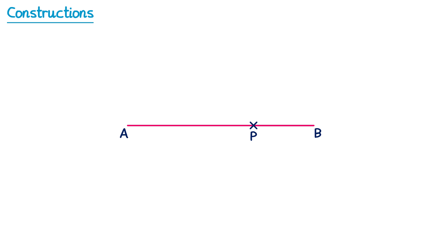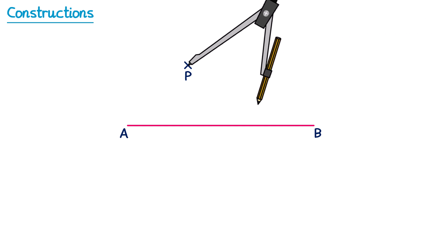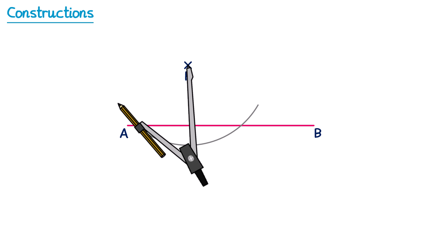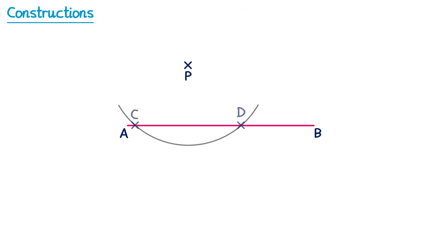Sometimes the point P is not actually on the line at all — it could be above or below the line. So what if we wanted to draw a perpendicular that went through this point P? Well it's actually quite similar. We take the pair of compasses and place them on the point P, and construct an arc that goes through the line AB in two places. If we label those as C and D, then we have this line CD, and if we construct a perpendicular bisector of this one, it will go through the point P.